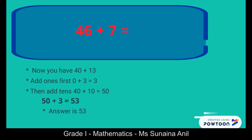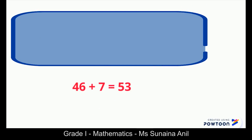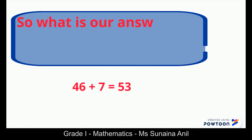Add tens. 40 plus 10 is 50. When we add 50 and 3 the answer is 53. So 46 plus 7 — what is the answer? Yes, 53.